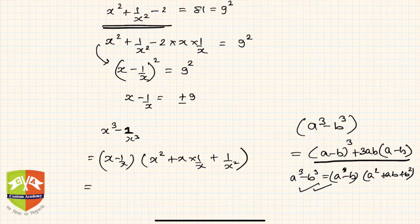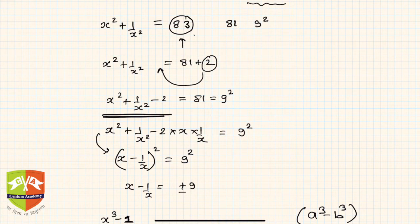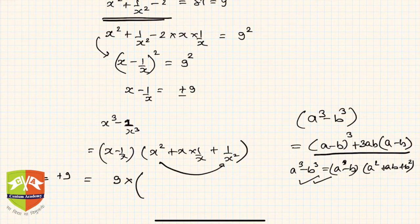Let's take +9 first. So when x - 1/x is equal to +9, it will be 9 × (x² + 1/x²). And x² + 1/x² was given to be equal to 83. So hence I can write 83 plus x × 1/x is 1, simply. So hence it is 9 × 84.